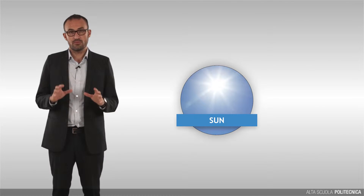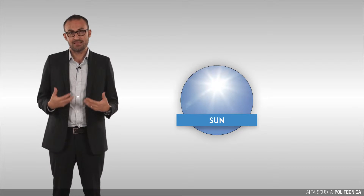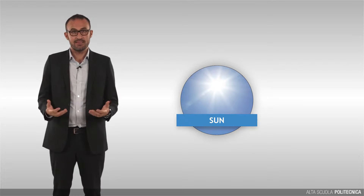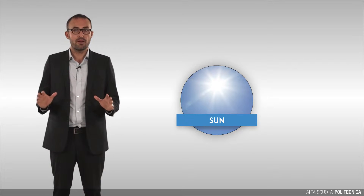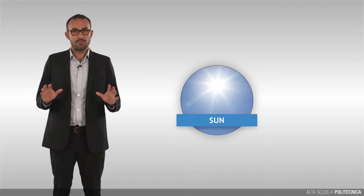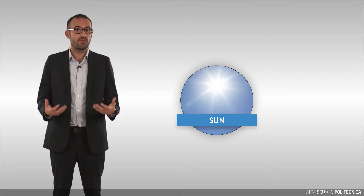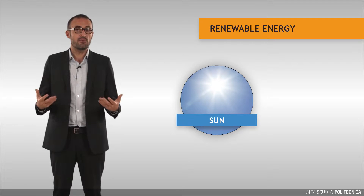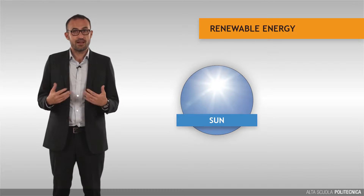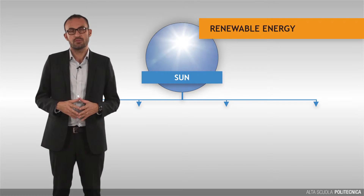The Earth receives a continuous flow of energy as solar radiation. The Sun is indeed the prime mover of many other energy forms. It is possible to tag some of these forms under the name of renewable energy, to link the direct and indirect connection with solar radiation.